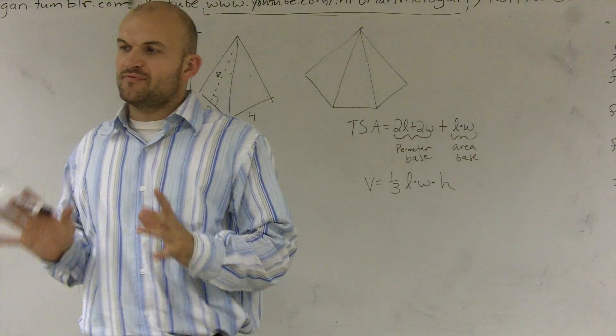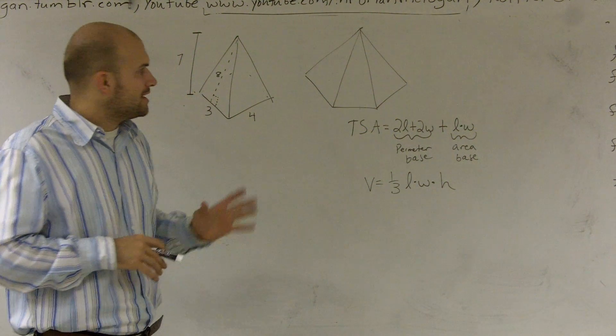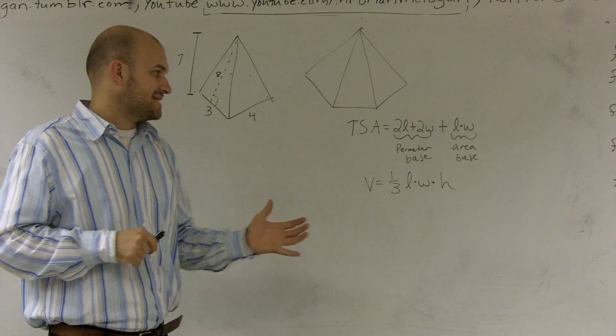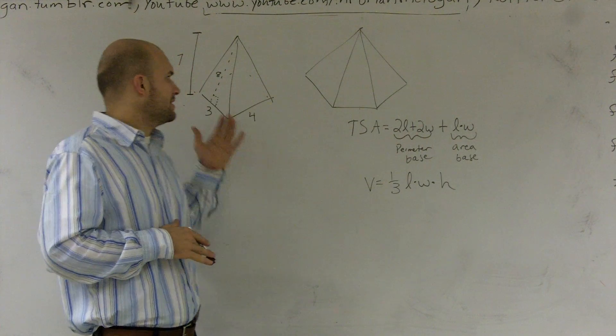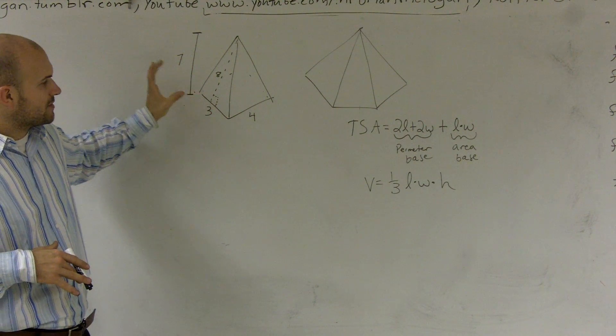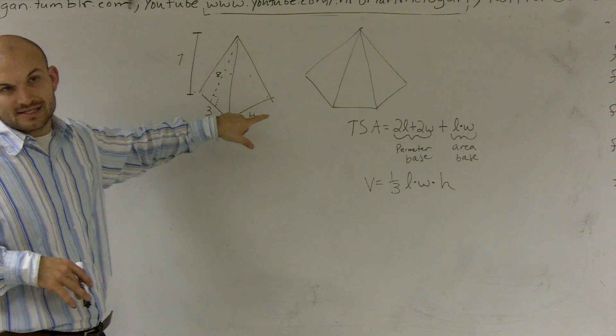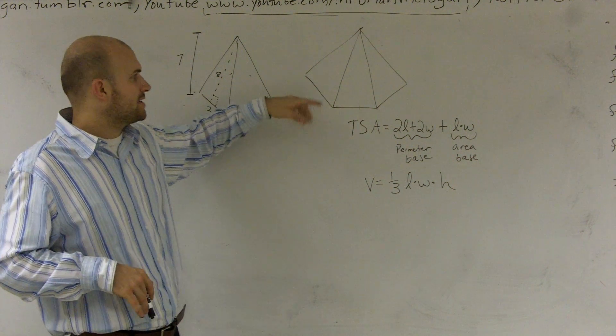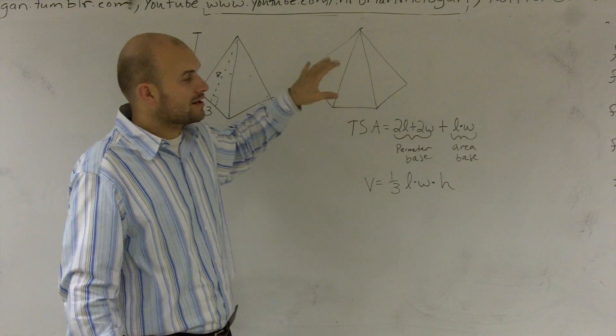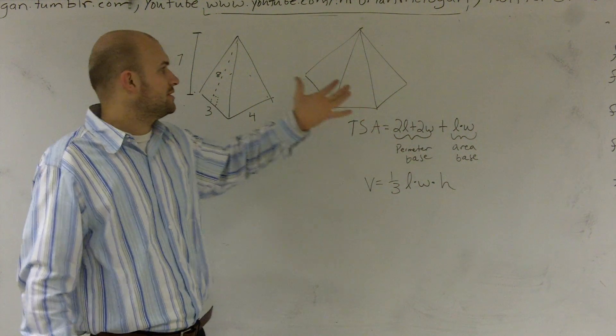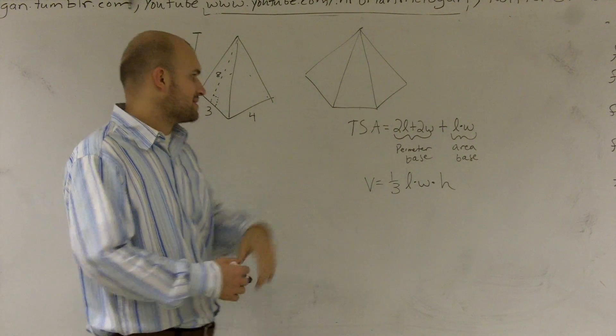When you find the volume and the total surface area of a pyramid, it really doesn't matter what your base is. Here, I'm going to find the total volume and the total surface area of a rectangular pyramid. That means my base is a rectangle. But it doesn't matter if it is a hexagon or an octagon or a triangle - no matter what your base is, you're going to do the same thing.